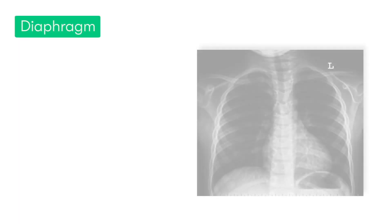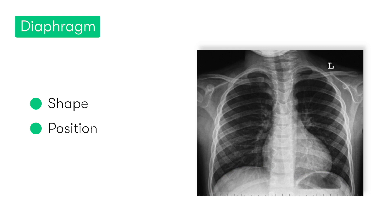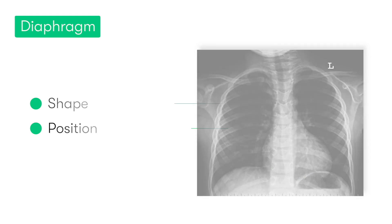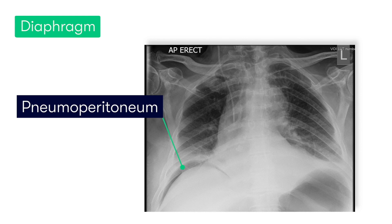Next in our mnemonic we have D, which is the diaphragm. So we start by checking the shape and its position. Remember that the right hemidiaphragm will normally sit slightly higher than the left, due to the presence of the liver underneath it. We should also be inspecting under the diaphragm to check for the presence of any pneumoperitoneum.